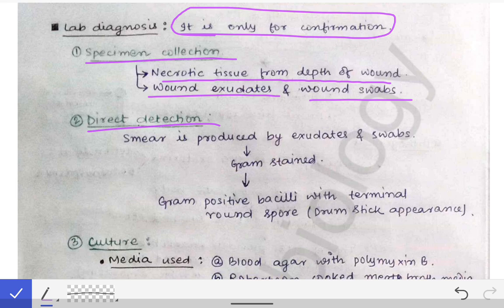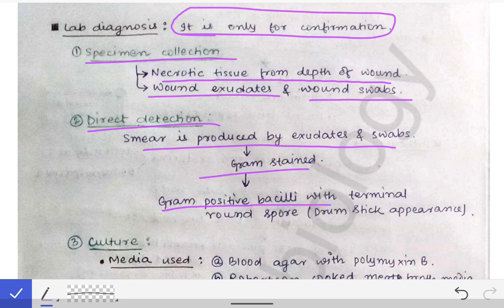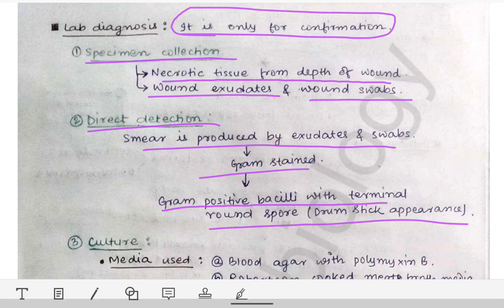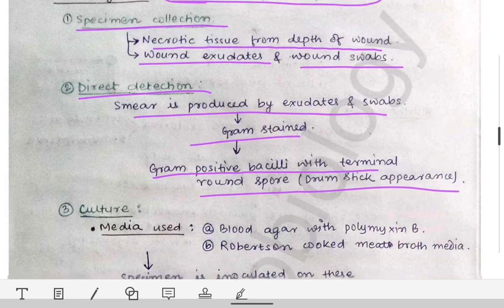After specimen collection, we do direct detection: a smear is prepared from the exudate or swab and gram-stained. Under the microscope we see gram-positive bacilli with terminal round spores showing a drumstick appearance — this gives a clue that this may be Clostridium tetani.